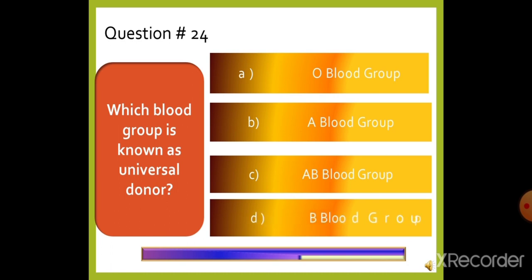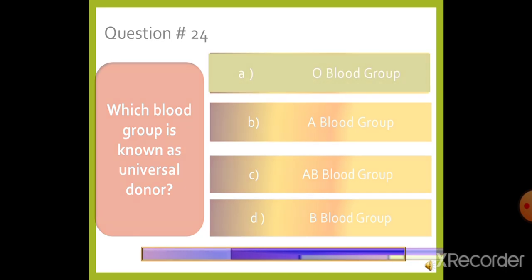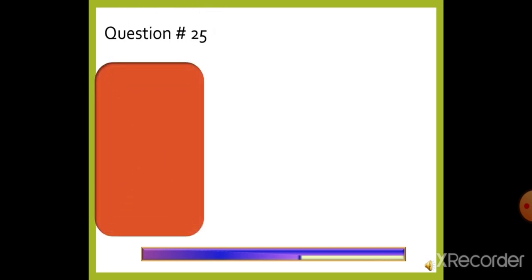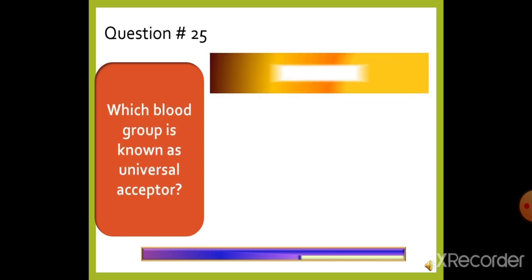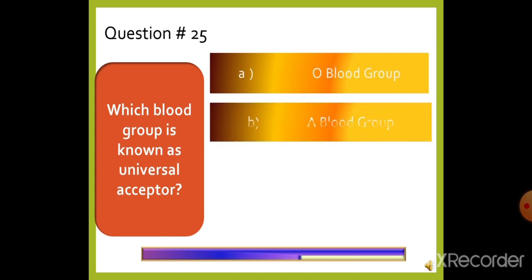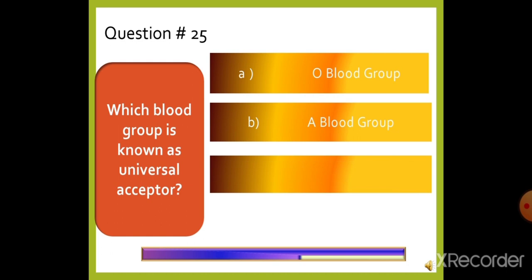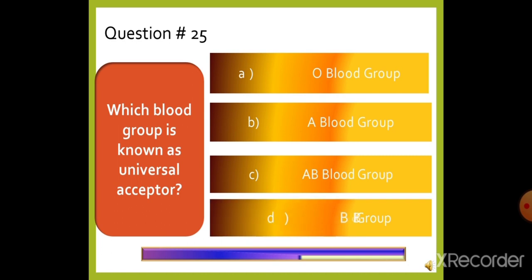Question 25, the last question: Which blood group is known as the universal acceptor? — option A: O blood group, option B: A blood group, option C: AB blood group, or option D: B blood group. The right answer is option C, AB blood group is known as the universal acceptor. Thank you.